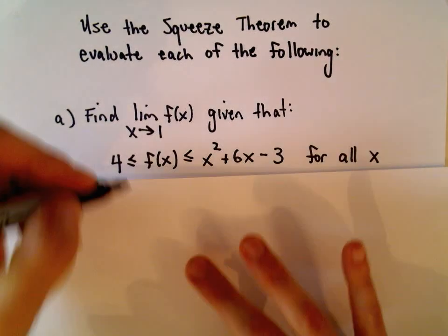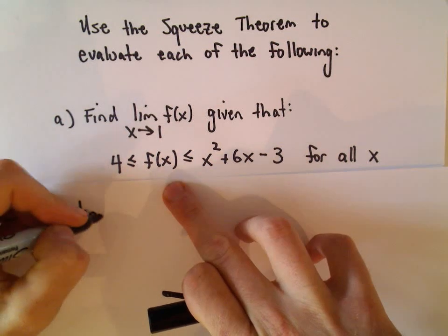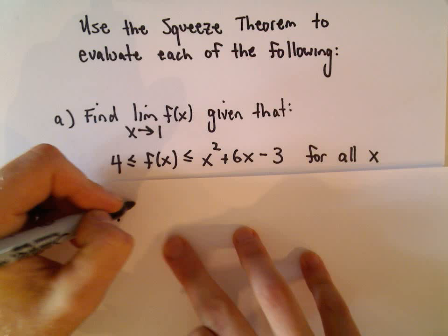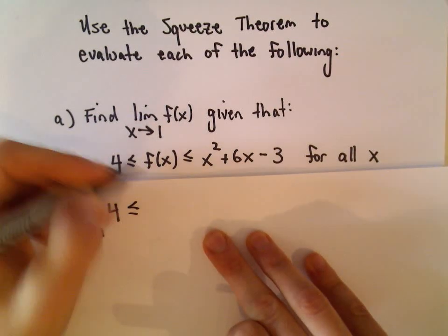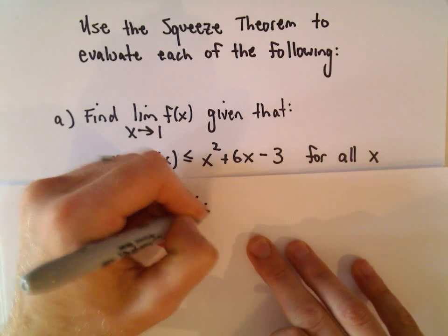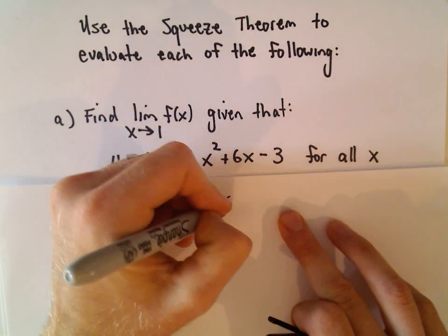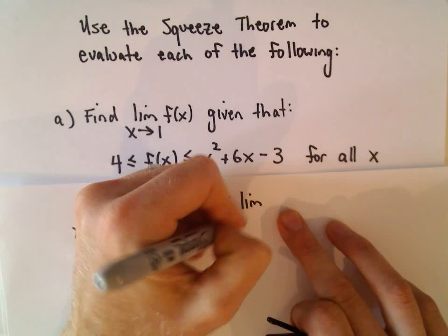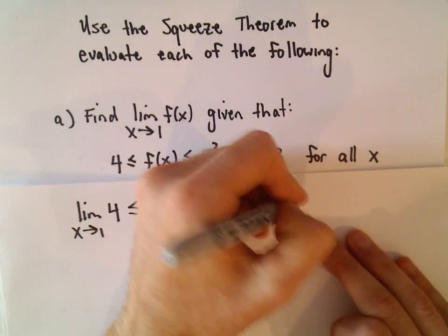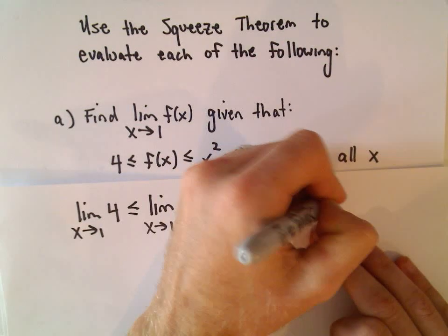But in this case, if you're given all this information, the idea is we can just take the limit of each part. So if we take the limit as x approaches 1 of the number 4, that's going to be less than or equal to the limit as x approaches 1 of our function f of x, and that's going to be less than or equal to the limit as x approaches 1 of x squared plus 6x minus 3.